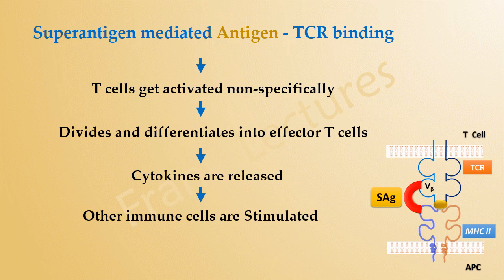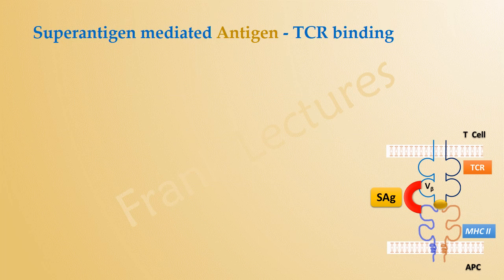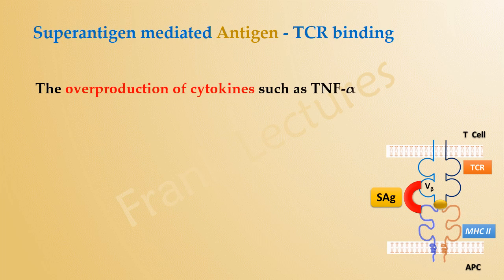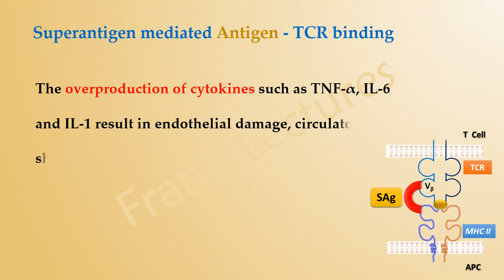These cytokines stimulate other cells such as macrophages and other phagocytes. The overproduction of cytokines such as tumor necrosis factor alpha, interleukin-6, and interleukin-1 results in endothelial damage, circulatory shock, and multi-organ failure.